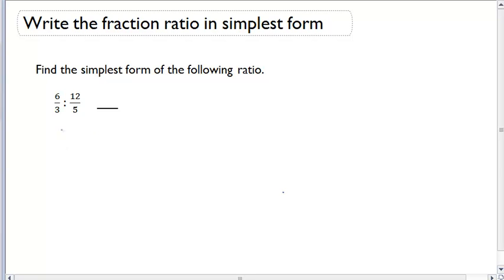So I have 6 over 3 to 12 over 5. What I want to do is multiply through by a common multiple in order to get rid of both fractions. I'm going to start off, I'm going to multiply this ratio by 15.